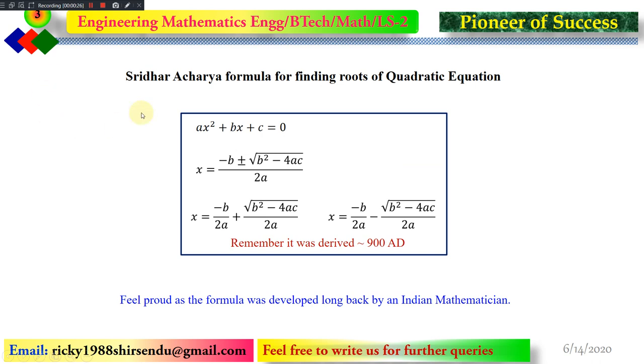This is the generic form of a quadratic equation: ax² + bx + c = 0, where a and b are coefficients and c is a constant. The solution of this quadratic equation is given by Sridhar Acharya formula, and that is x = (-b ± √(b² - 4ac))/2a.